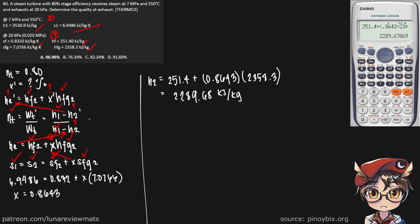And that makes us able to solve for H2 prime. We can simply put the values in here straight up. N sub t is 0.80, H1 is 3530.9 minus H2 prime, over H1 again, minus our H2.